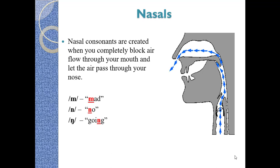Nasal sounds, as you can see from the picture, are produced more from the nose — the air goes into the nose instead of the mouth. Nasal consonants are created when you completely block airflow through your mouth, so that the air does not come out from the mouth. Instead, it is blocked in the oral cavity but produced in the nasal cavity — basically the nose. The oral cavity is the mouth, and the nasal cavity is the nose.